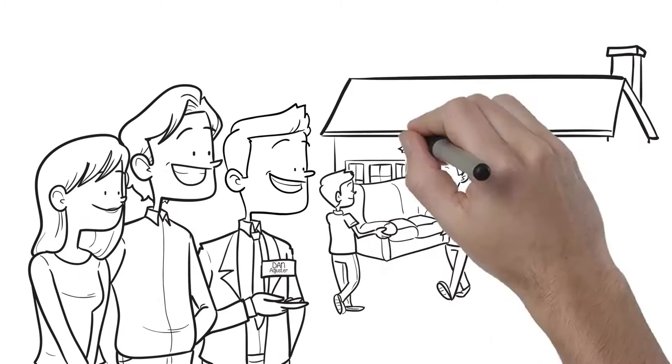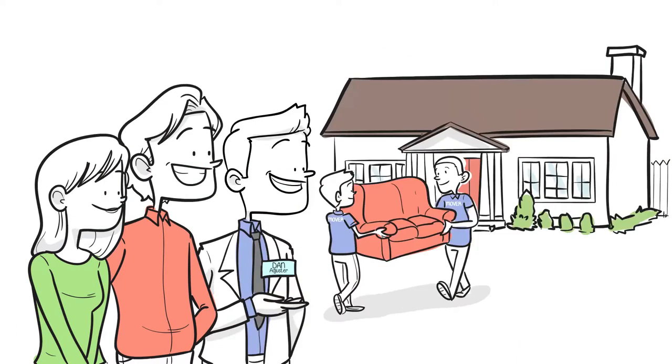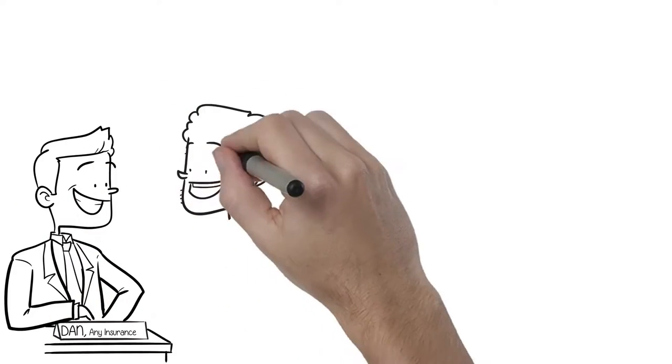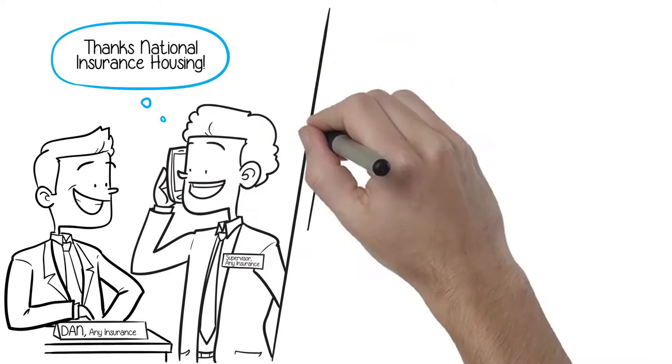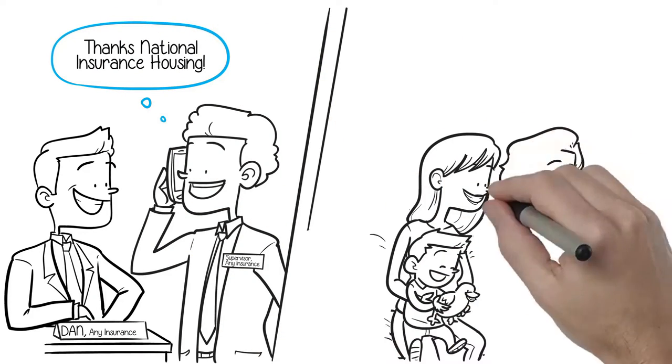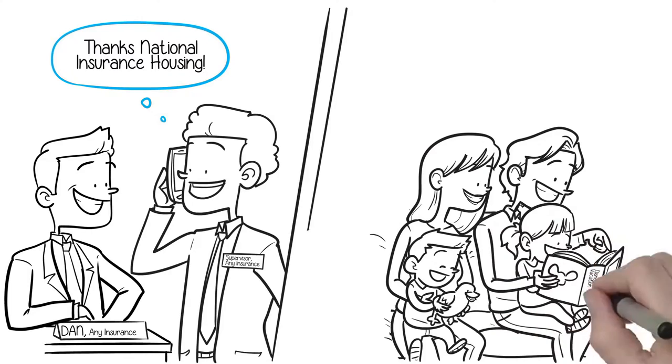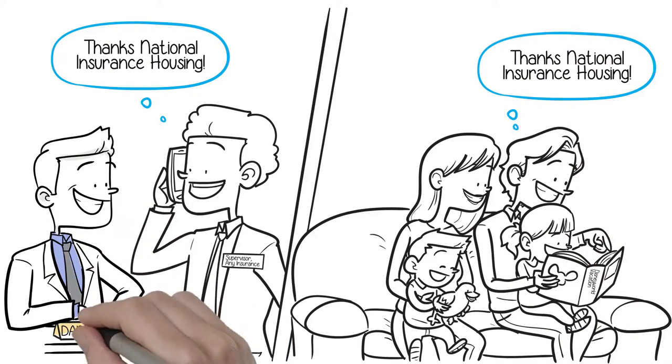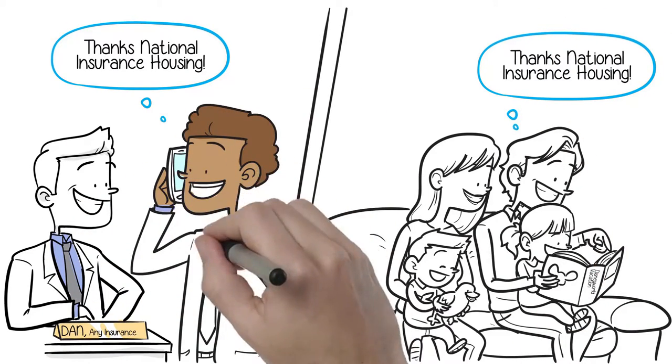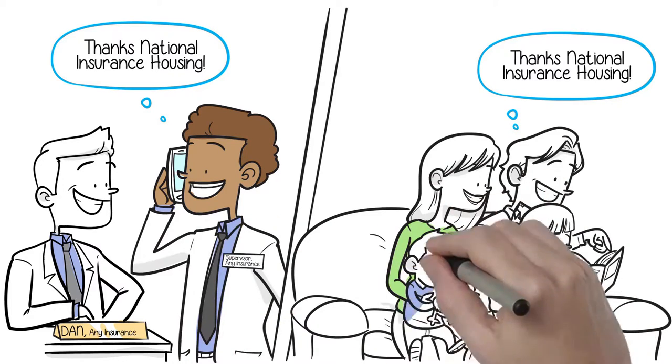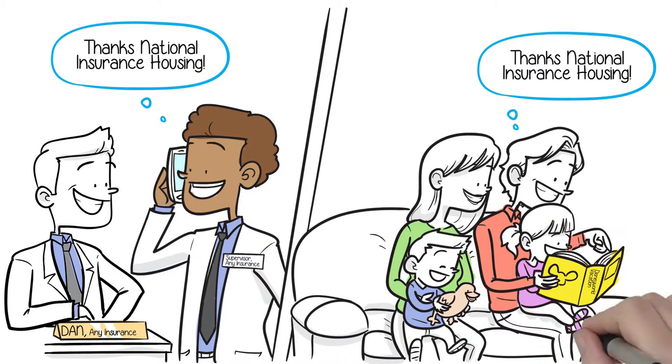National will even customize furniture and housewares to match your policyholders' lifestyle, taste, and preferences. National Insurance Housing successfully and efficiently executes all components of temporary living for ALE claims nationwide. National is available 24 hours a day, 7 days a week, every day of the year to help adjusters and policyholders through the temporary living process. It's no wonder National exceeds the 95th percentile for policyholder satisfaction.